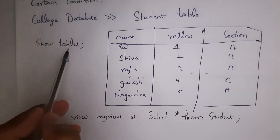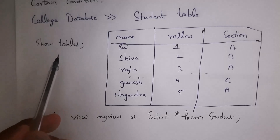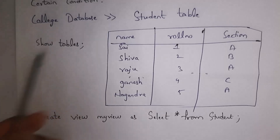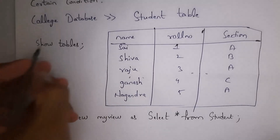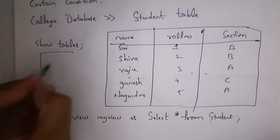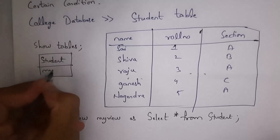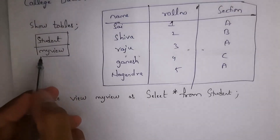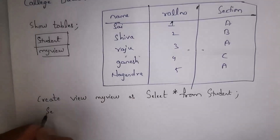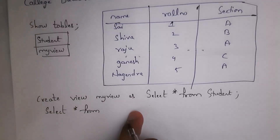Whenever you write SHOW TABLES it will display all tables present in the database. There are two tables in the database, so it will display two tables: the student table and the 'my_view' table. To see the data in 'my_view', you need to write SELECT * FROM followed by the view name.